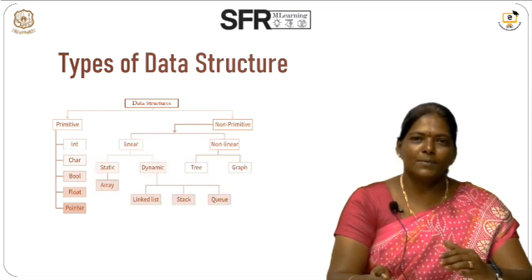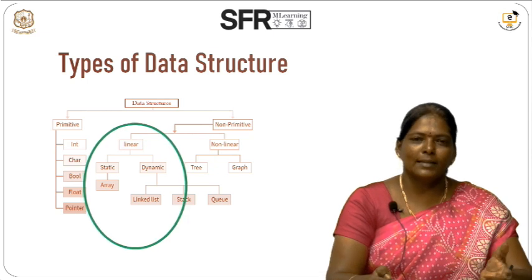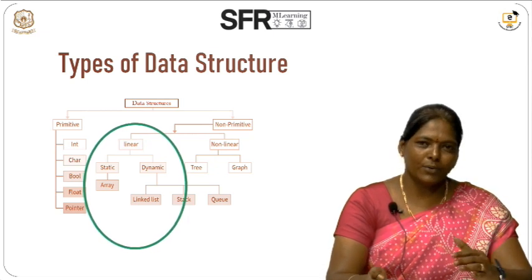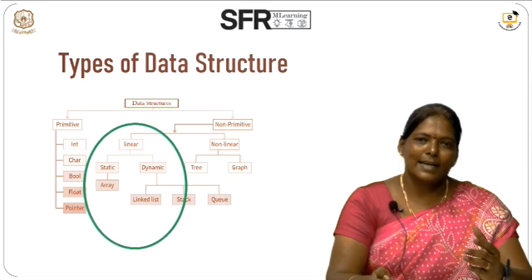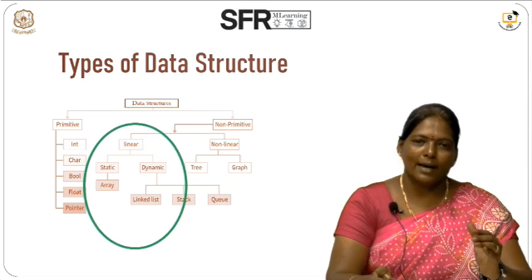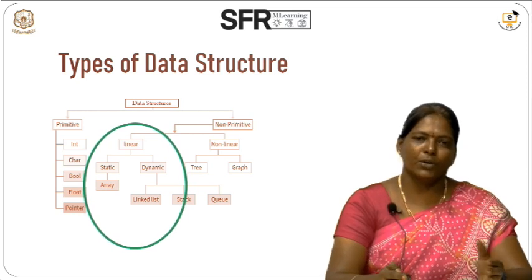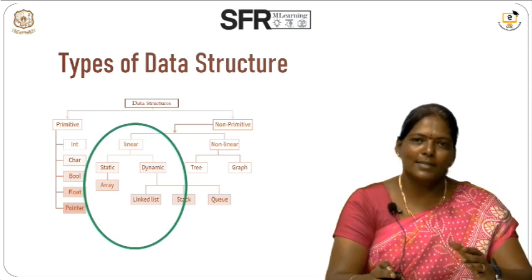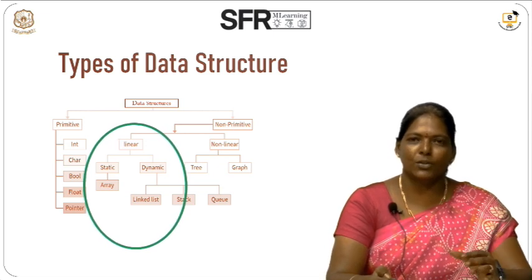In the non-primitive data types, we have two groups. One is the linear data structure, which is again of two types: static data structure and dynamic data structure. Under static data structure, we have only one data structure called the array, which is what we are going to see in this video. Under dynamic data structure, we have linked list, stacks, and queues.